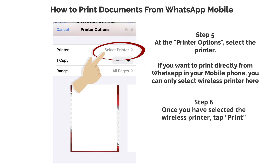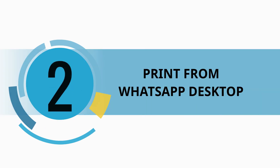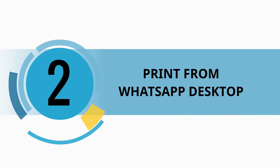Step 6: Once you have selected the wireless printer, tap Print. Print from WhatsApp Desktop.